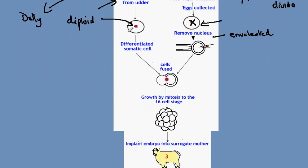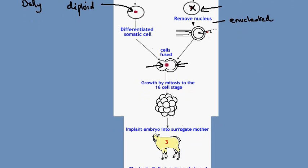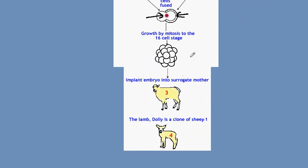We take the cell with the genetic information we wish to copy, and the enucleated egg cell which wants to divide, and we fuse them together. This gives us the genetic information in a cell that wants to divide, and the combination results in many cell divisions by mitosis to form a ball of cells called the blastula.